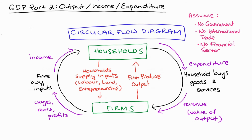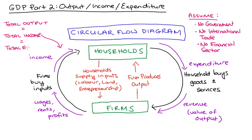Now, this is a highly simple model. We're assuming there's no government, no exports or imports, no international trade, no financial sector, and we assume that the household spends all of their income, so there's no savings and no lending. So this is a very simple and quite unrealistic scenario. But you can see that the flow of money in terms of expenditure, income, and the value of output are all equal to one another. That's what sustains this circular loop — this interrelationship between the parts of our model.